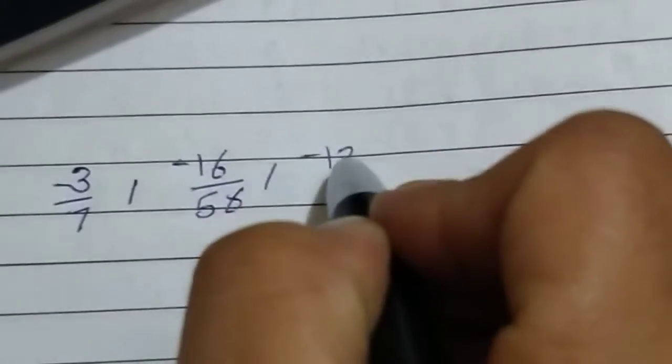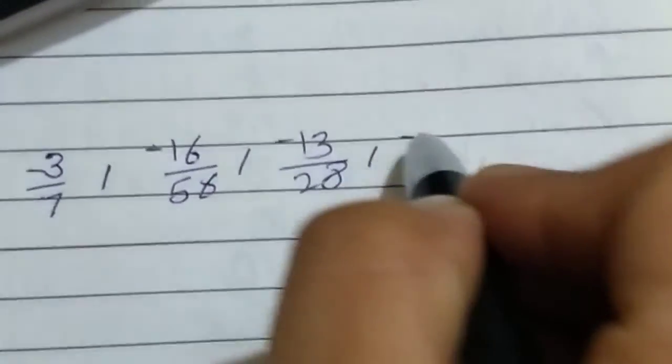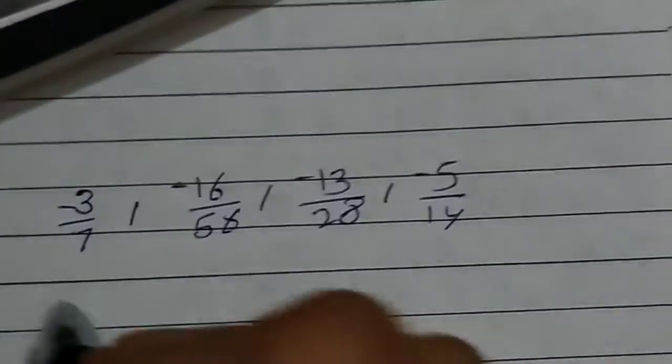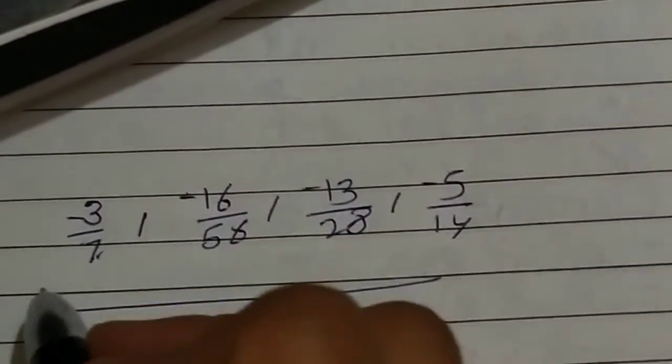This one is minus three by seven, next one is minus sixteen by fifty six, minus thirteen by twenty eight, and minus five by fourteen. LCM is fifty six. Seven divided gives eight, eight times three is twenty four.